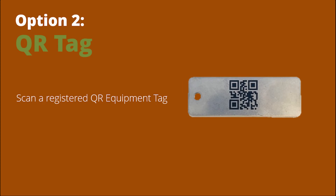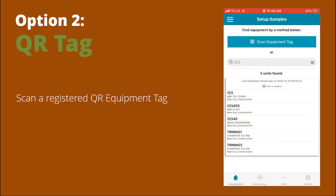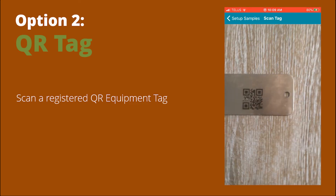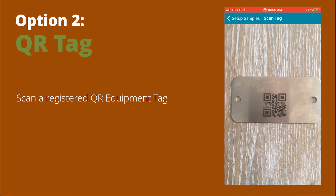Option two is scanning using a registered QR equipment tag. You'd start with the same basic screen, but this time you would click the Scan Equipment Tag button at the top.